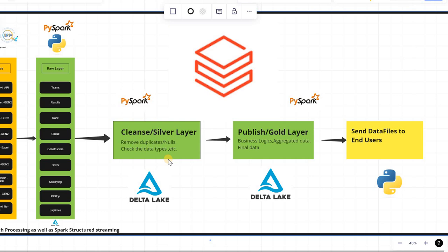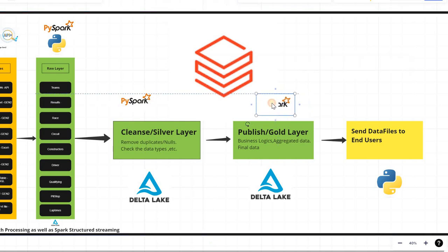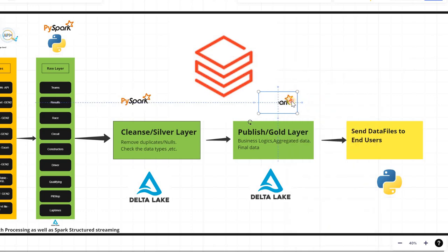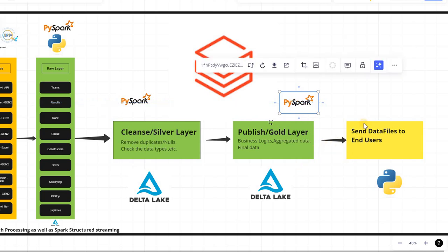After cleansing the data and performing checks, we will publish the data into our gold layer. Here we will write our business logic, create aggregated data, dimension tables, fact tables, and so on. The final data goes into this gold layer and we will use PySpark to achieve the result.